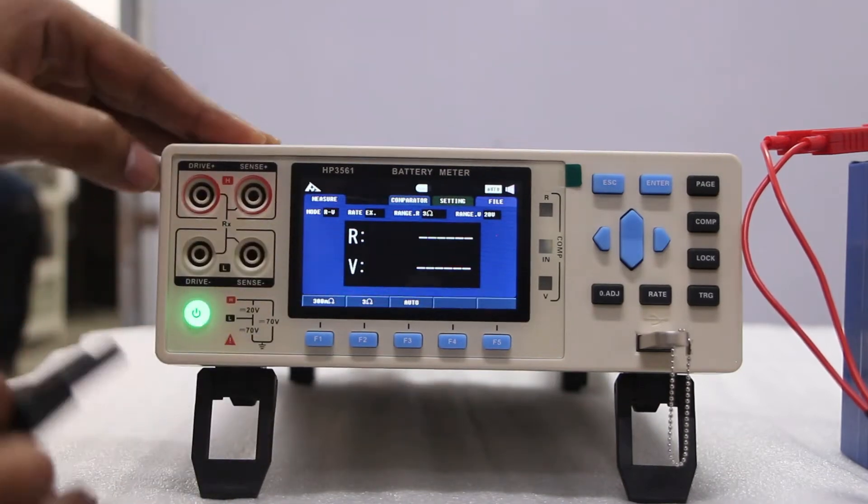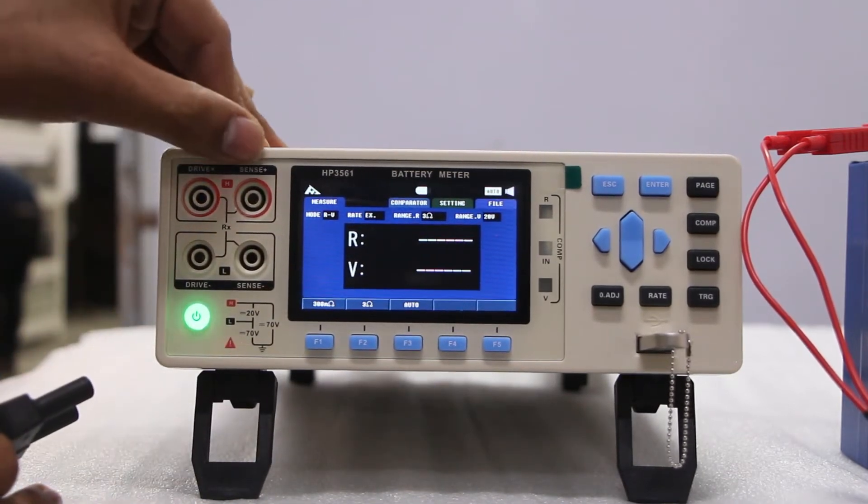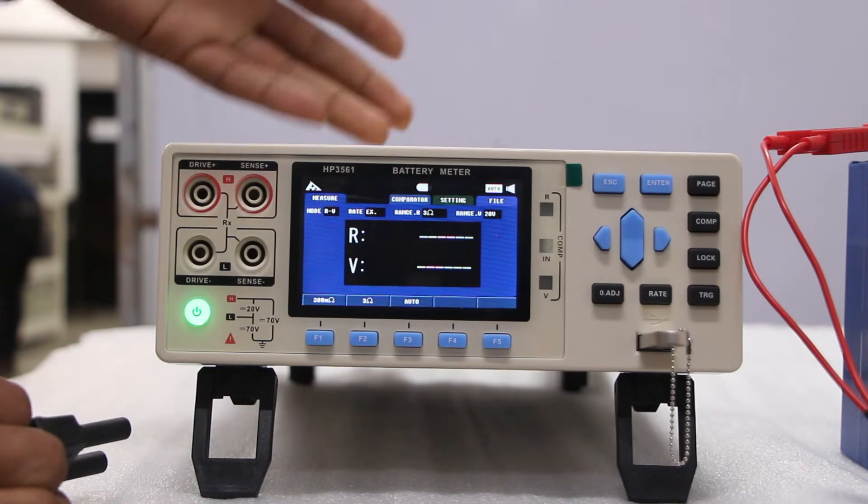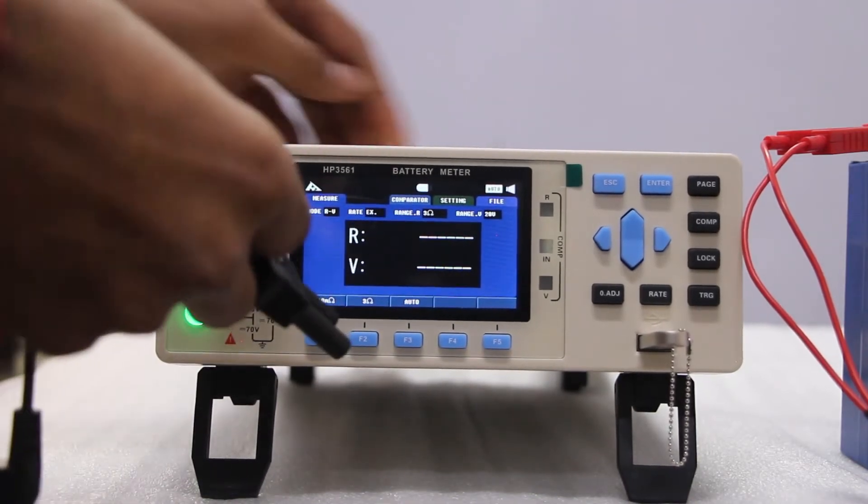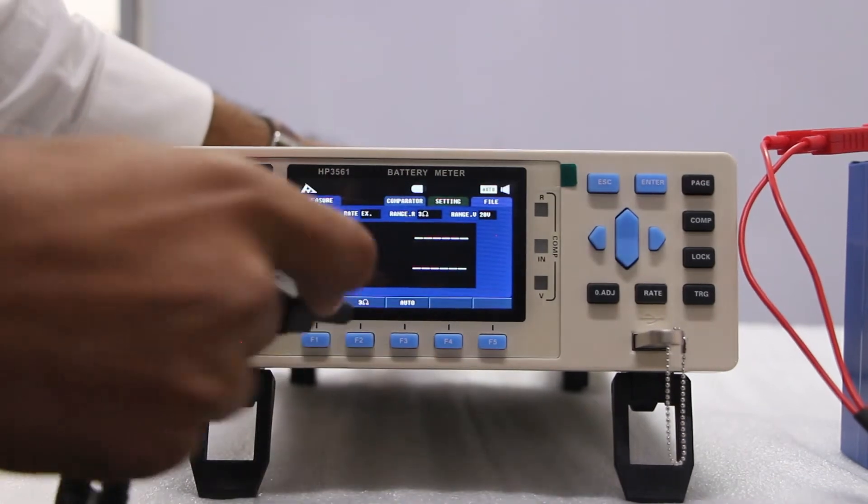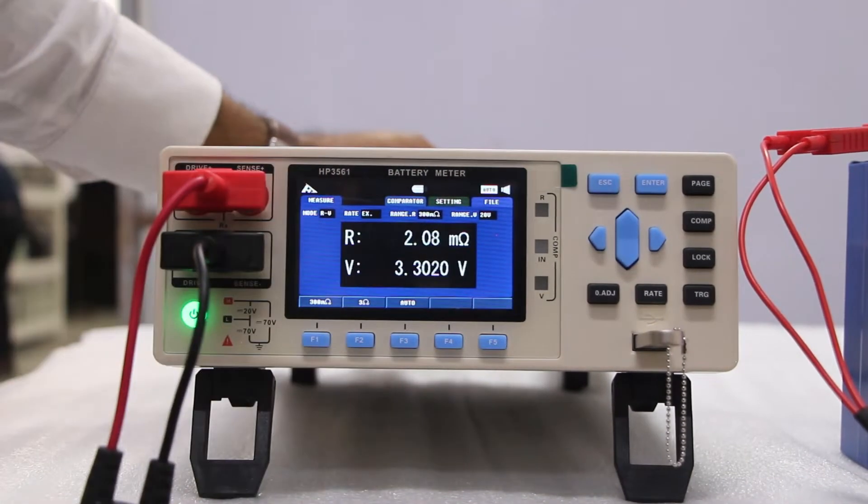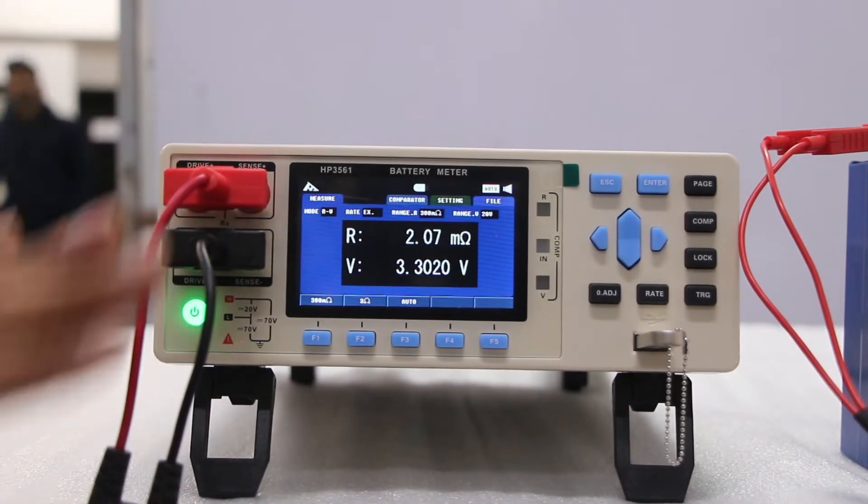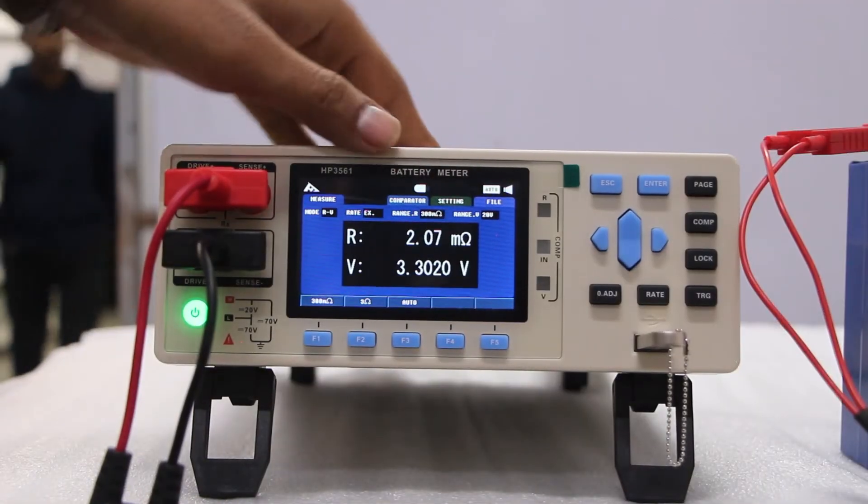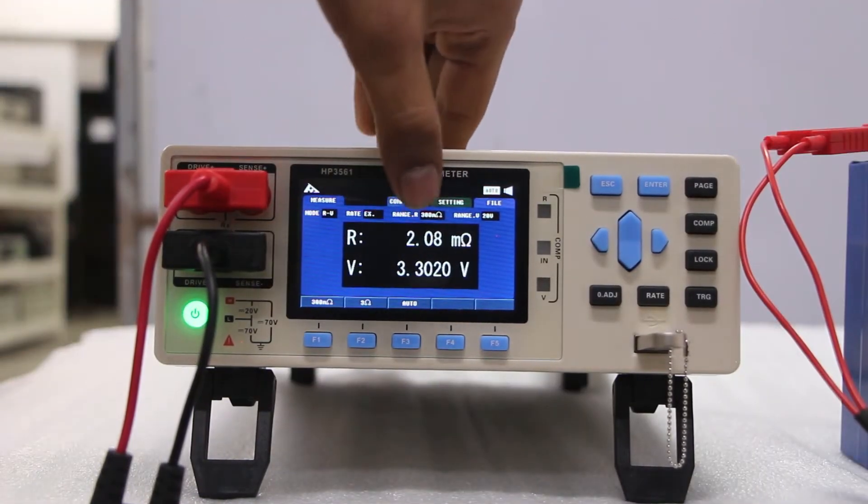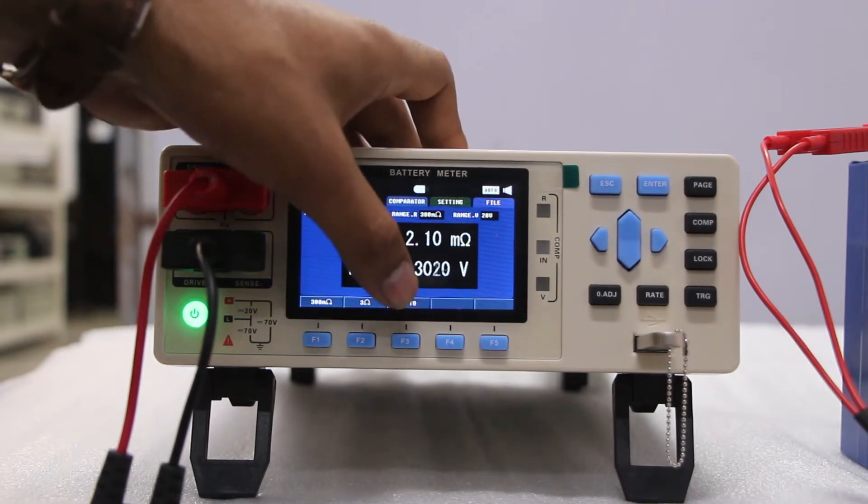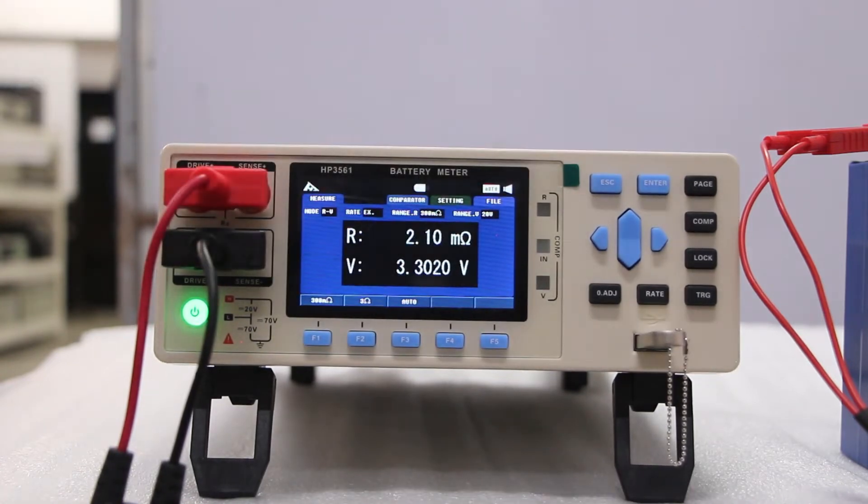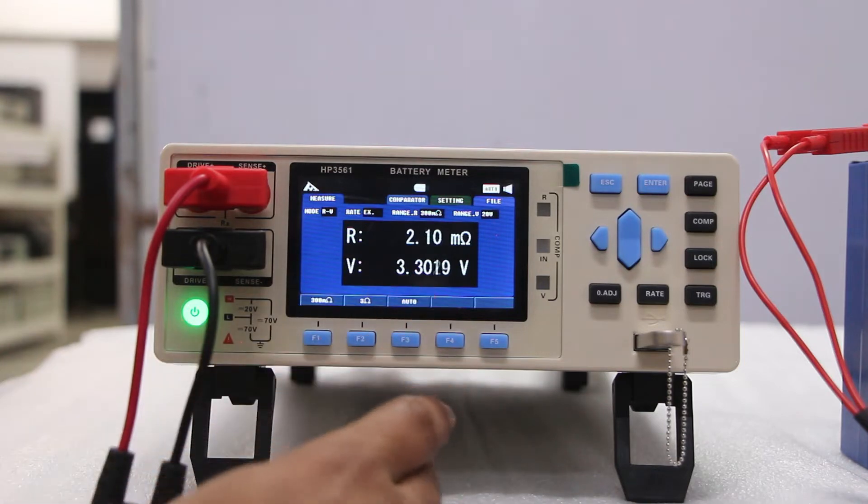It comes with like you can also see that there is a drive and sense. Sense means voltage or IR sensing purpose and the drive means the power supply. Since we have already connected our cell, you can see that the range R comes with two milliohm at a time and the voltage limit is 3.3 which is LFP cell that I am using. That's why it is getting 3.3 volts.